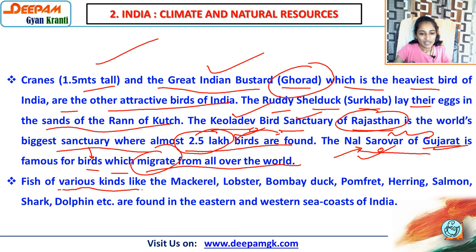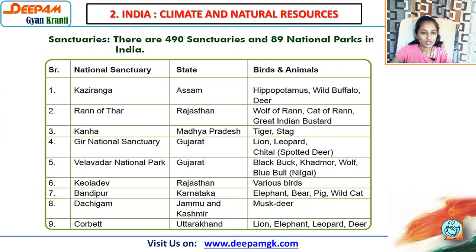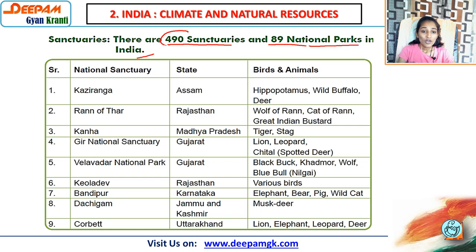Fish of various kinds — like mackerel, lobster, Bombay duck, pomfret, herring, salmon, shark, dolphin, etc. — are found in the eastern and western sea coasts of India. There are 490 sanctuaries and 89 national parks in India — you have to remember this.